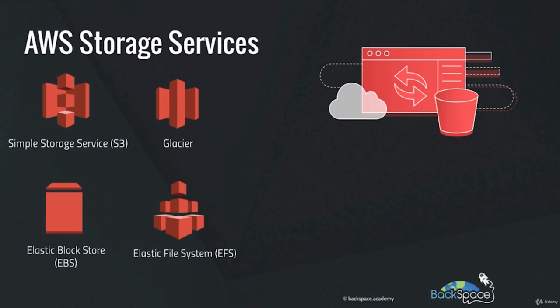Amazon Elastic File System, or EFS, is network-attached storage specifically for Amazon EC2 servers. Because it is network-attached storage, it allows multiple servers to access the one data source — similar to a NAS on your home network that can be accessed by multiple computers.